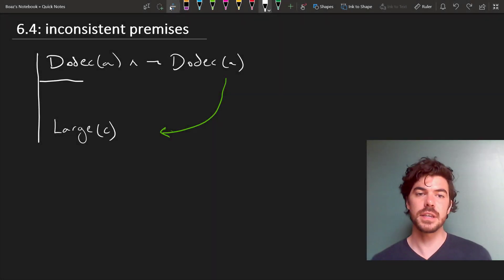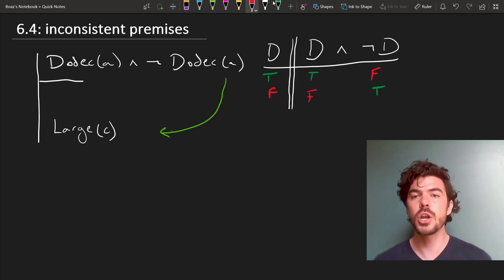One way to see why this is, is to put it into a truth table. I'm just going to write D here for our sentence, and it comes out as D and not D. We already know that for a conjunction to come out true, both conjuncts have to come out true. And so this is false in both instances.